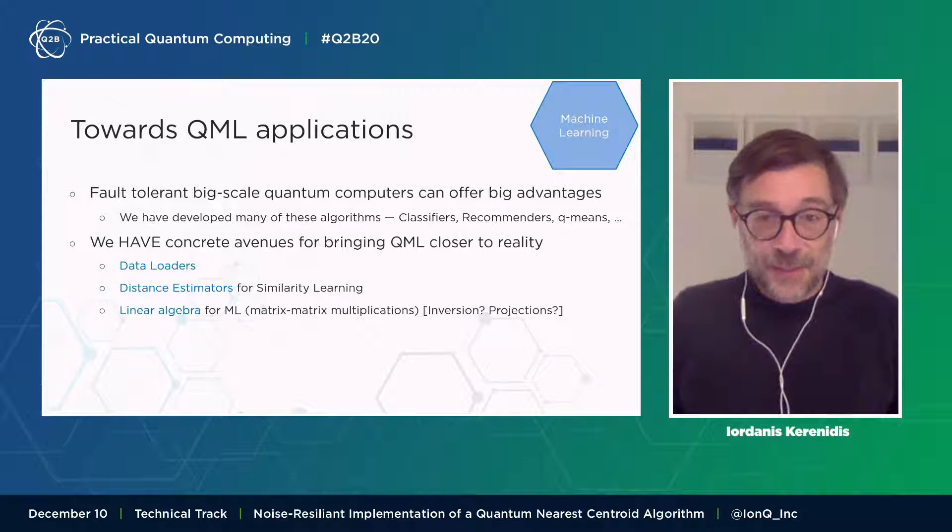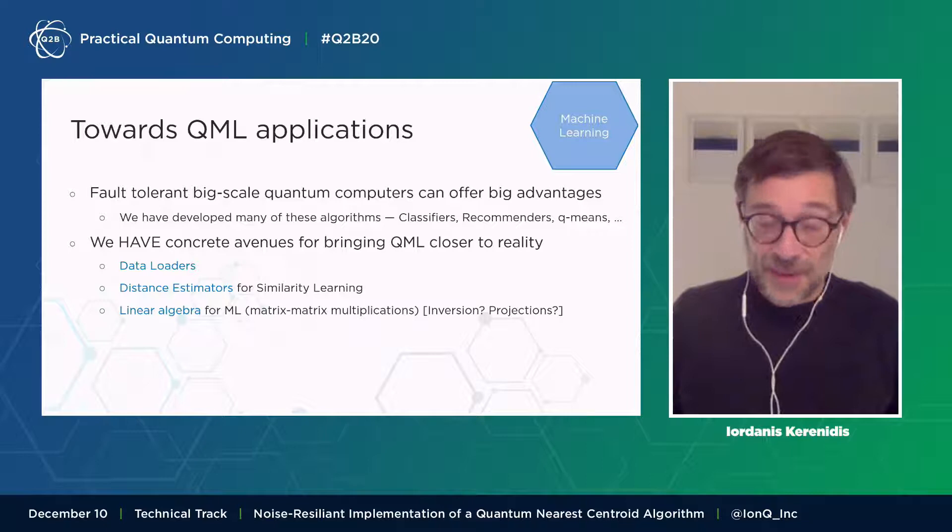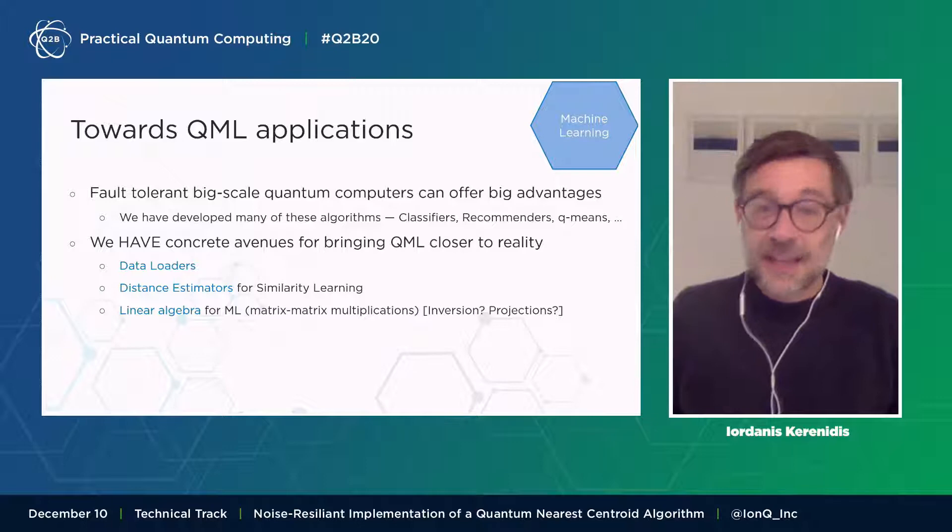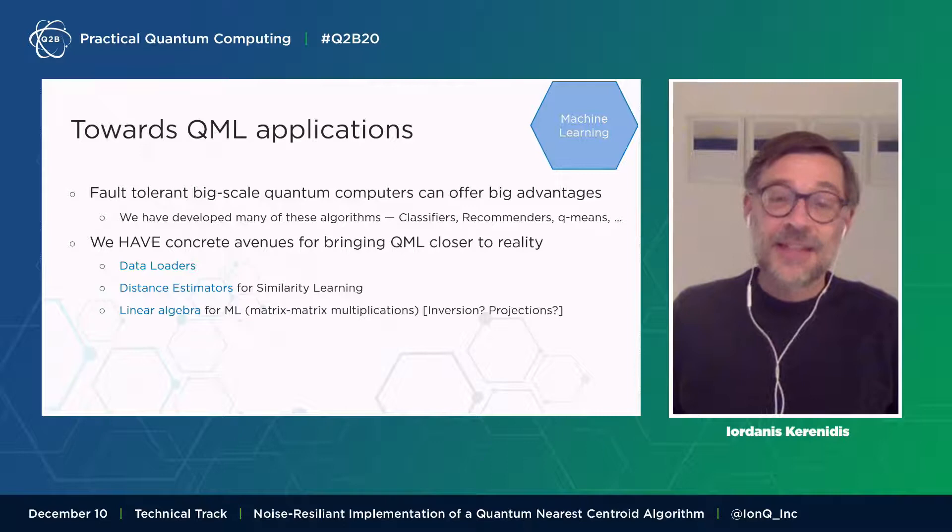The second reason is that we have concrete avenues for bringing QML closer to reality. For example, what we will see here in the talk and what we used in order to experiment and implement our classification algorithms is quantum subroutines that have to do first with data loading. These are subroutines that take classical data and encode them as quantum states, which are important for the quantum algorithms afterwards. And second, quantum circuits and quantum algorithms for distance estimation. This is one fundamental primitive in machine learning, which is used pretty much everywhere in similarity learning. For example, for algorithms like k-nearest neighbors, nearest centroid, support vector machines, and so forth.